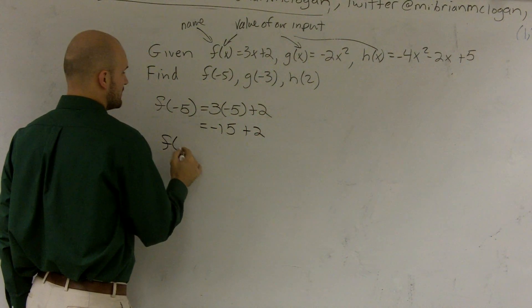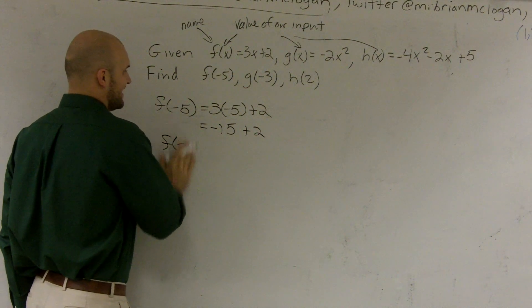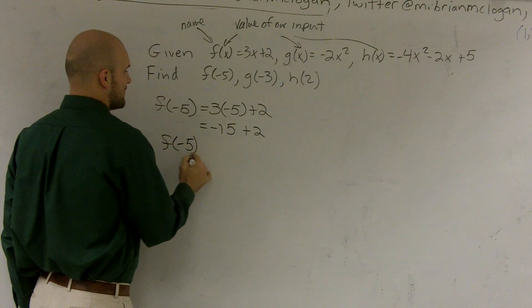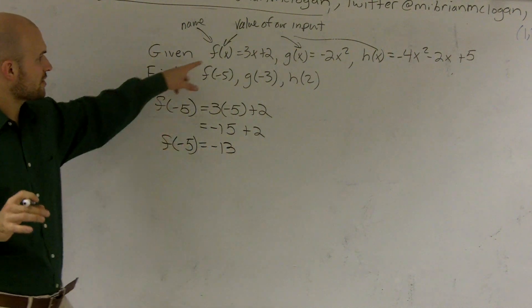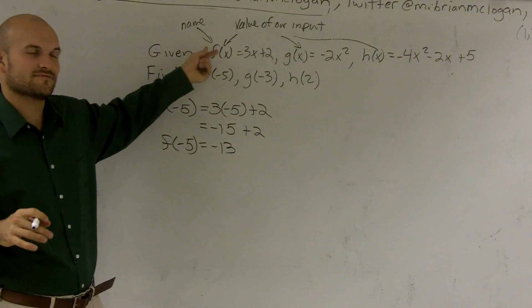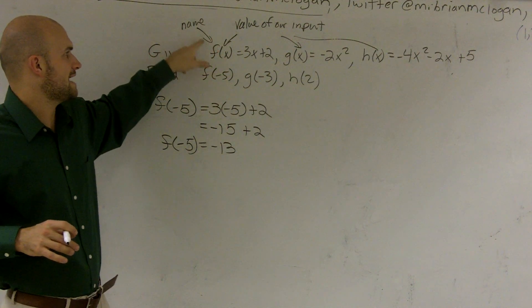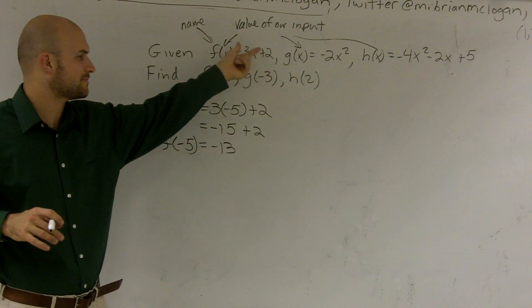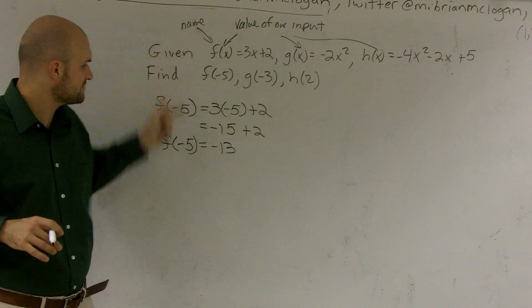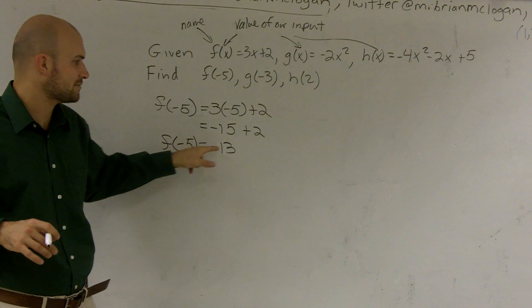So I say f of negative 5 equals negative 13. That means this function, f of x, or the name Frank at the value of x equals 3x plus 2, the value of this function at negative 5 equals negative 13.